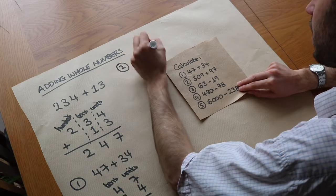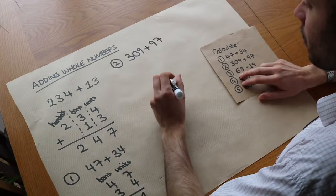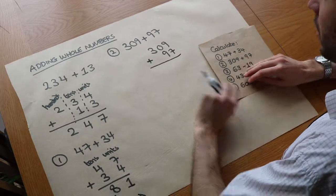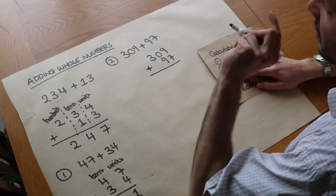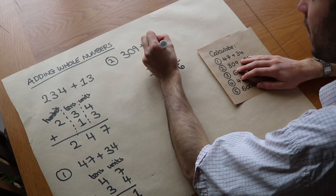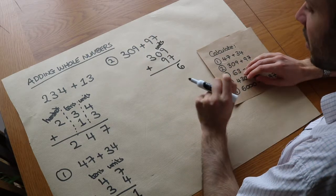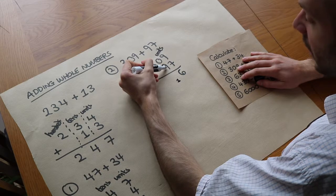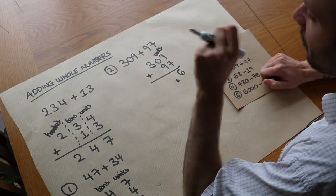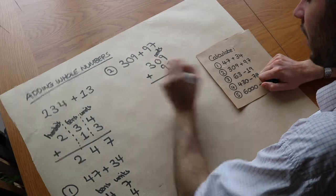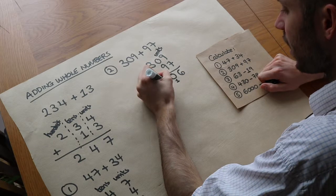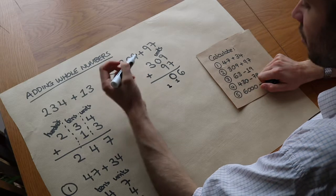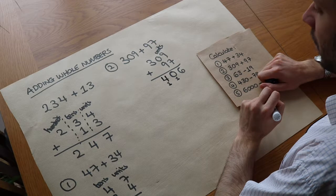Next we have 309 plus 97. Let's arrange into columns, being careful about the alignment. Now 9 plus 7 is 16, so we've got 6 units — put the 6 in the units column. But we've got an extra ten, so we have a carry; I'll put it down here as 1 extra ten. Now 0 plus 9 is 9, plus the 1 carry is 10. The units digit is 0, so we put 0 here and carry that 1 ten into the next column. We've got 3 hundreds with no extra hundreds added, but with that extra carried hundred, 3 plus 1 is 4. So we get 406.